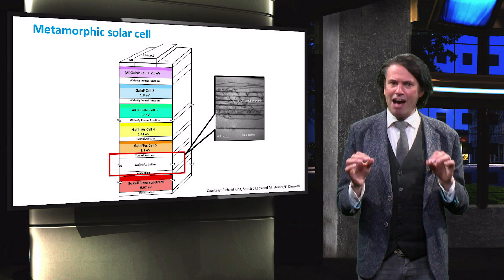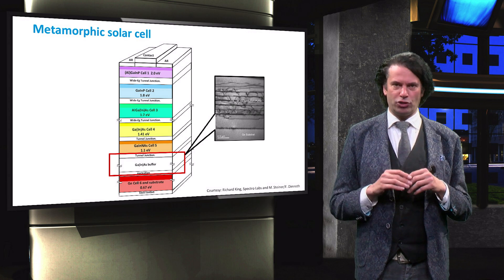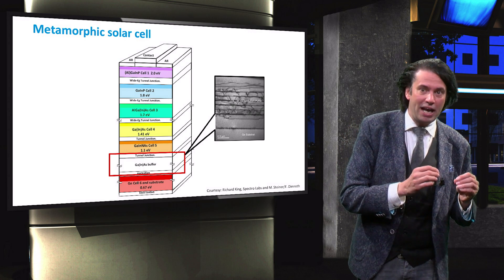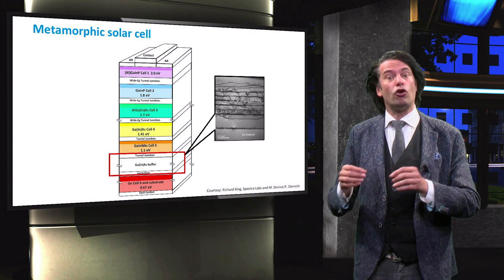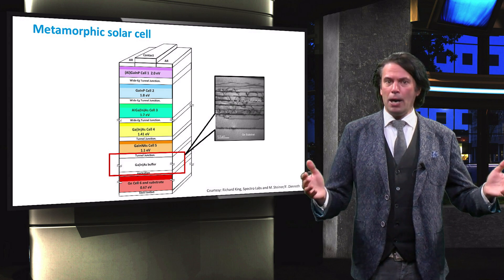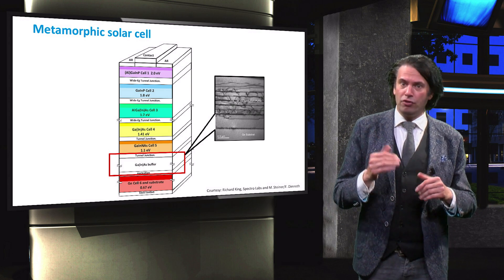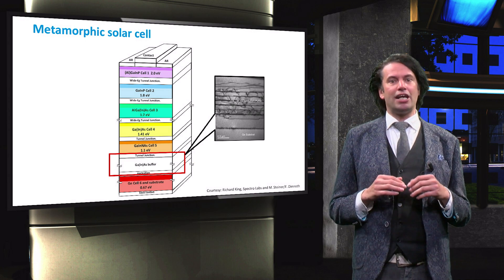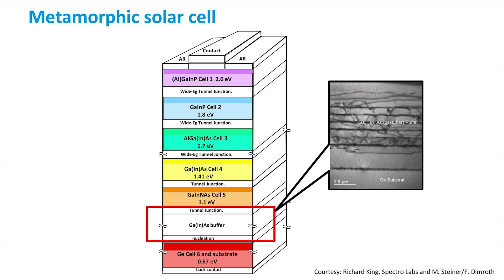These buffer layers have a graded profile in the lattice constant, going from the lattice constant of one p-n junction to the lattice constant of the next p-n junction. By using this graded profile, the strain at the interface of the lattice mismatched material is reduced.